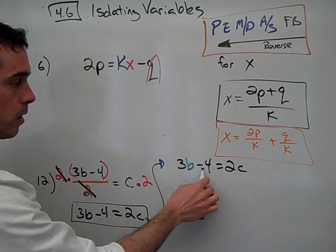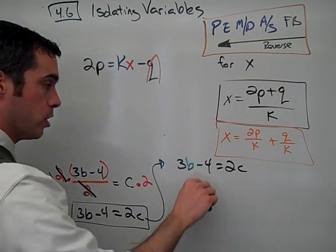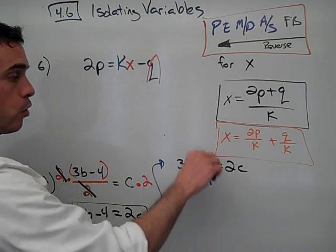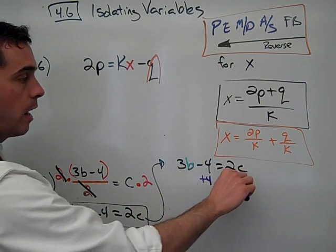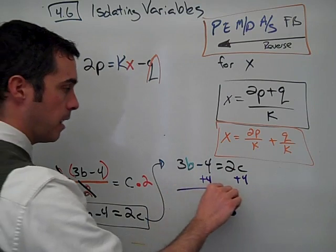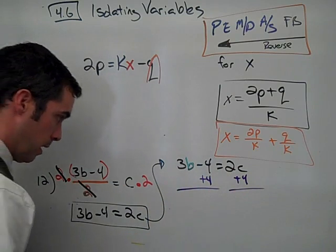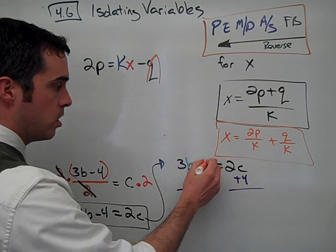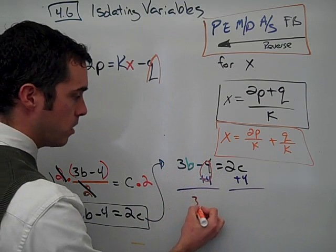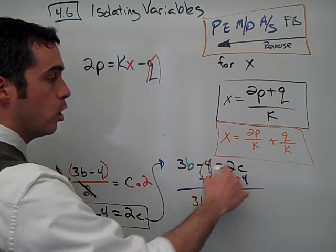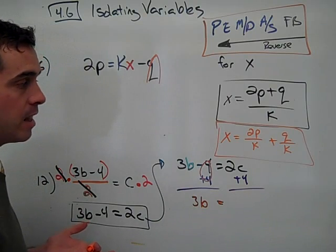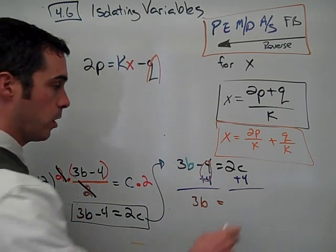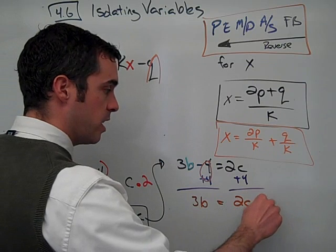I've dealt with the fraction bar. Now I'll deal with the addition and subtraction part. I have a minus 4. I will do the opposite operation: plus 4. That will create a zero pair there. I'll add 4 to the other side to maintain balance. Minus 4 and plus 4 create 0. 3b minus 0 is simply 3b equals. Those are unlike terms, I can't add them. 2c plus 4 will just be written 2c plus 4.